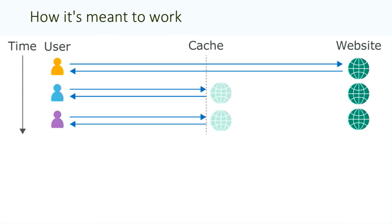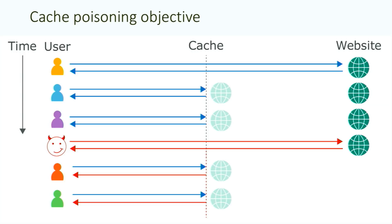So, first let's take a very quick look at how caching is supposed to work. Here, we've got three users fetching the same resource one after the other. This resource might be an image or a JavaScript file or even just a HTML web page. When the cache sees this resource being fetched for the first time, it saves a local copy of it, which means it can then serve that copy up to other users without having to communicate with the backend server, which speeds the website up and everyone's happy. Our objective with web cache poisoning is to send a request to the server that causes a harmful, malicious response to come back to me, and then we want the cache to save that and serve it up to other users.